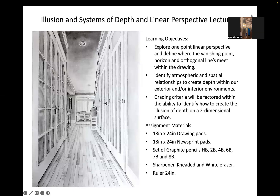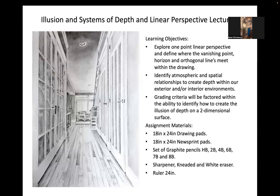For our learning objectives, we'll explore one-point linear perspective and define where the vanishing point, horizon, and orthogonal lines meet within our drawing. Level one students are only required to do one-point linear perspective — not two-point, three-point, or four-point. Anything beyond that would be a sphere, so keep it simple. We'll also identify atmospheric and spatial relationships to create depth within exterior and/or interior environments. Grading criteria will factor in the ability to create the illusion of depth on a two-dimensional surface.